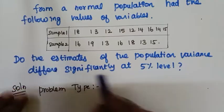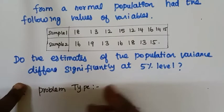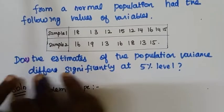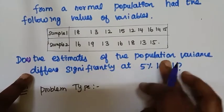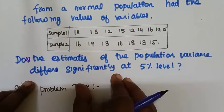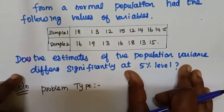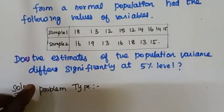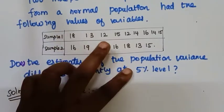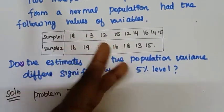Do the estimates of the population variance differ significantly at 5% level of significance?